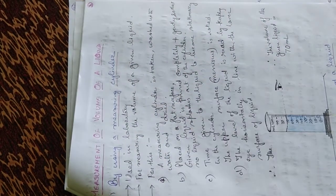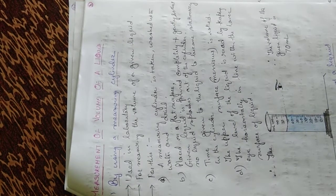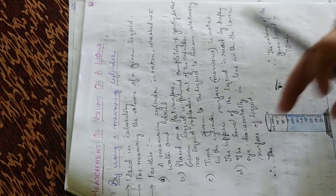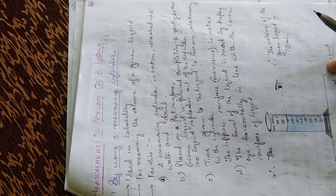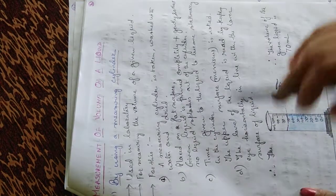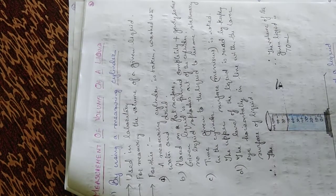A measuring cylinder is used for measuring the volume of a liquid, which is generally used in the laboratory. First, we take a measuring cylinder, wash it with water and dry it. Then we place the measuring cylinder on a flat surface and pour the given liquid completely and gently so that no liquid splashes out of the cylinder.